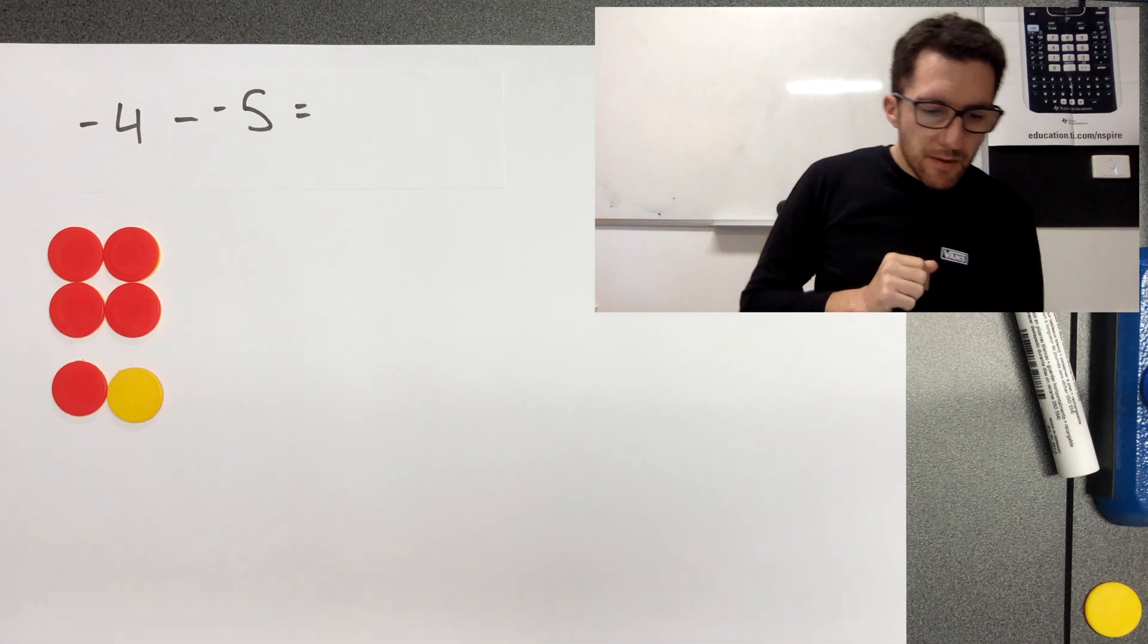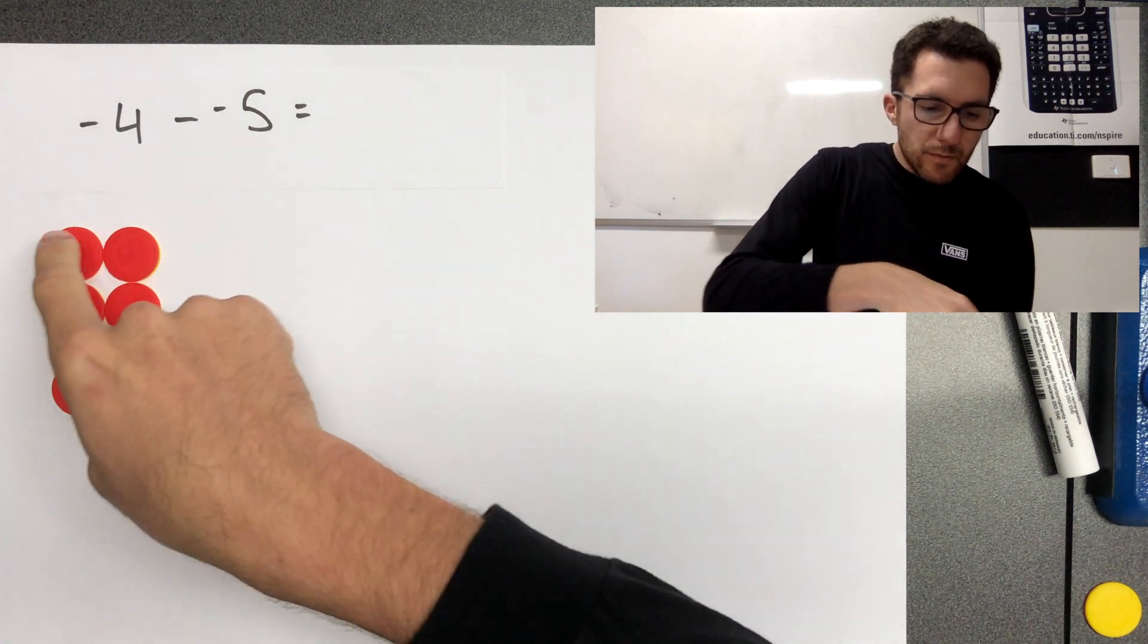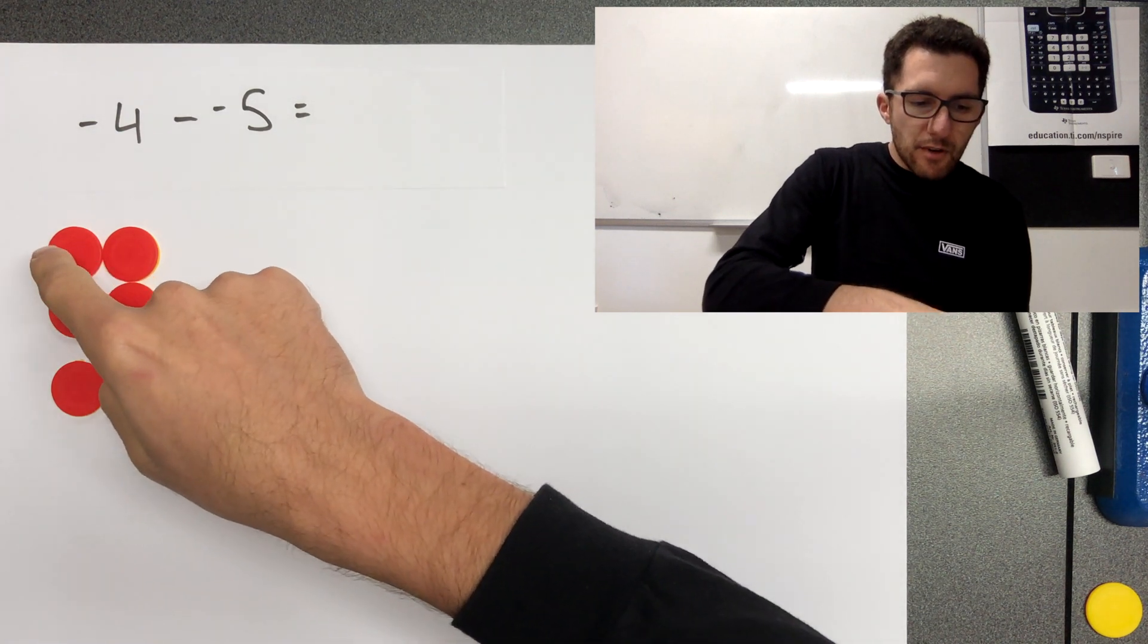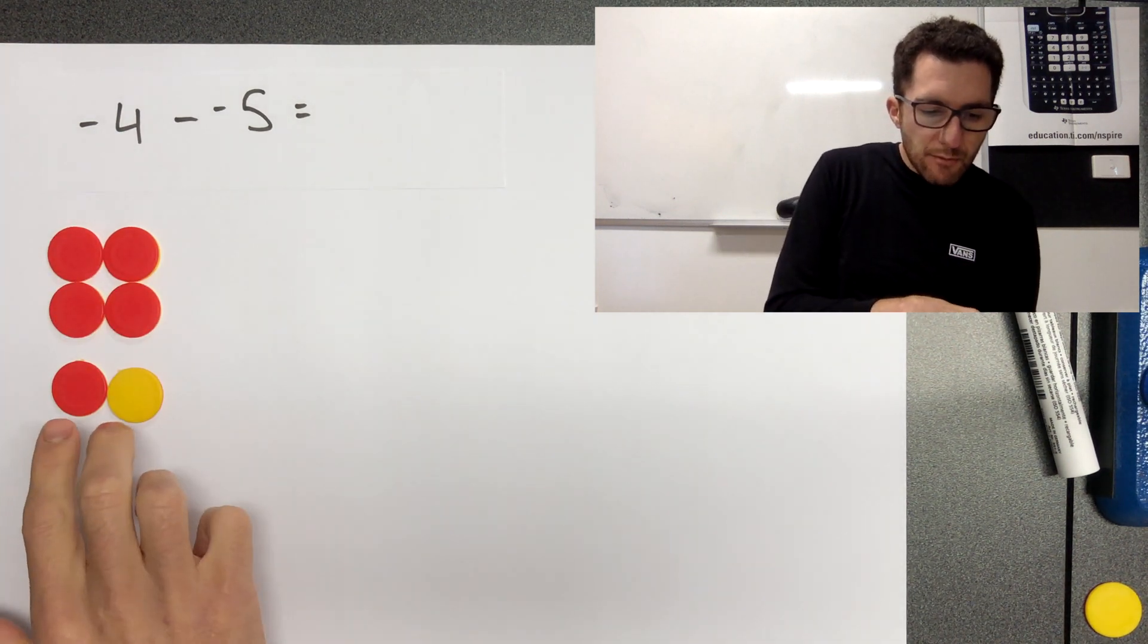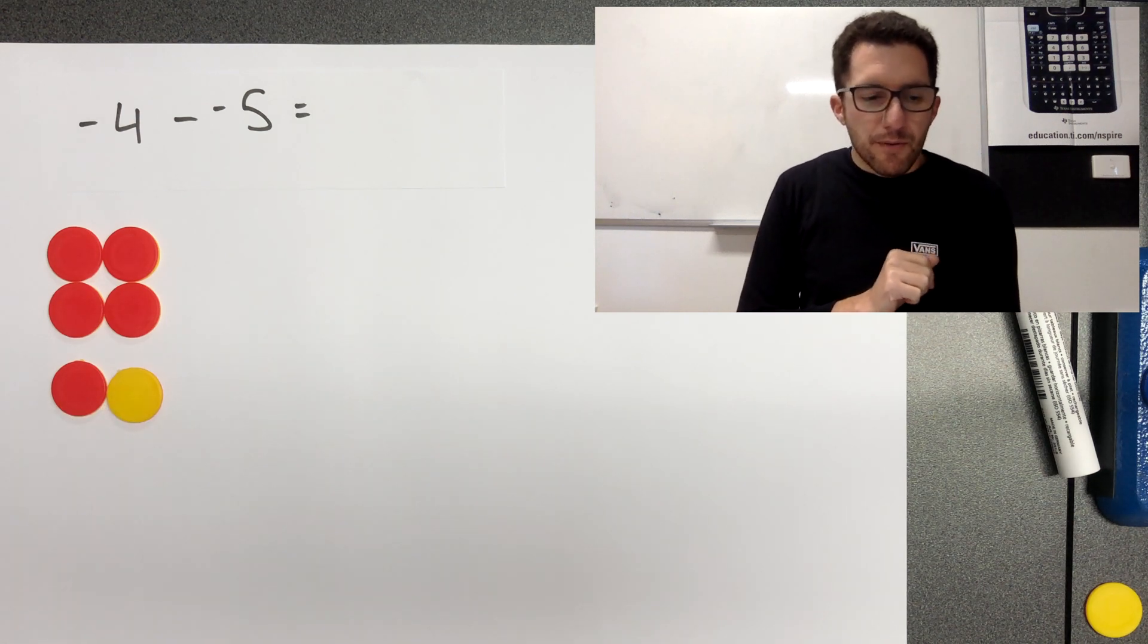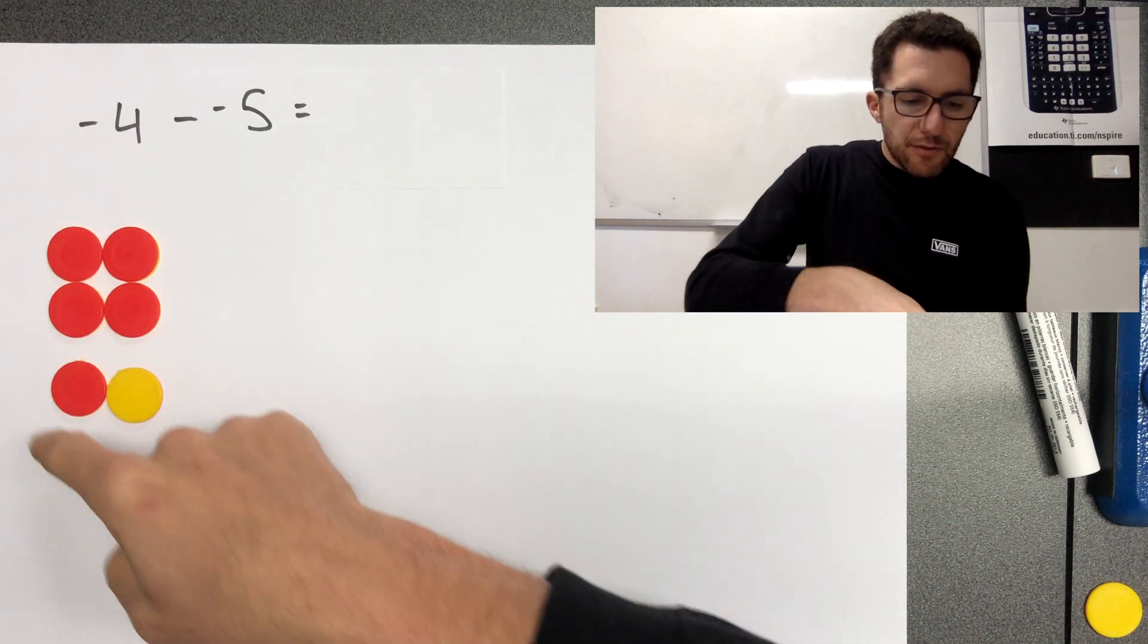So just need to double check we all agree this is still negative four here, because we've got our four negatives and then we've got another negative which is cancelled out. So that is worth zero. So that's negative four.